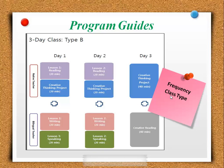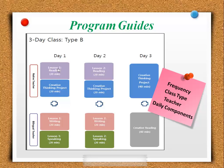You'll also see the class type, so if your class is labeled type B then you'll refer to the program guide that says type B, and vice versa. You'll also see that the teacher is labeled, so you can double-check if you're teaching the right components — native teacher, that's going to be you, and then these parts are taught by the bilingual teacher. Finally, you can see what the daily components are; for this class you would be teaching reading and also the creative thinking project.